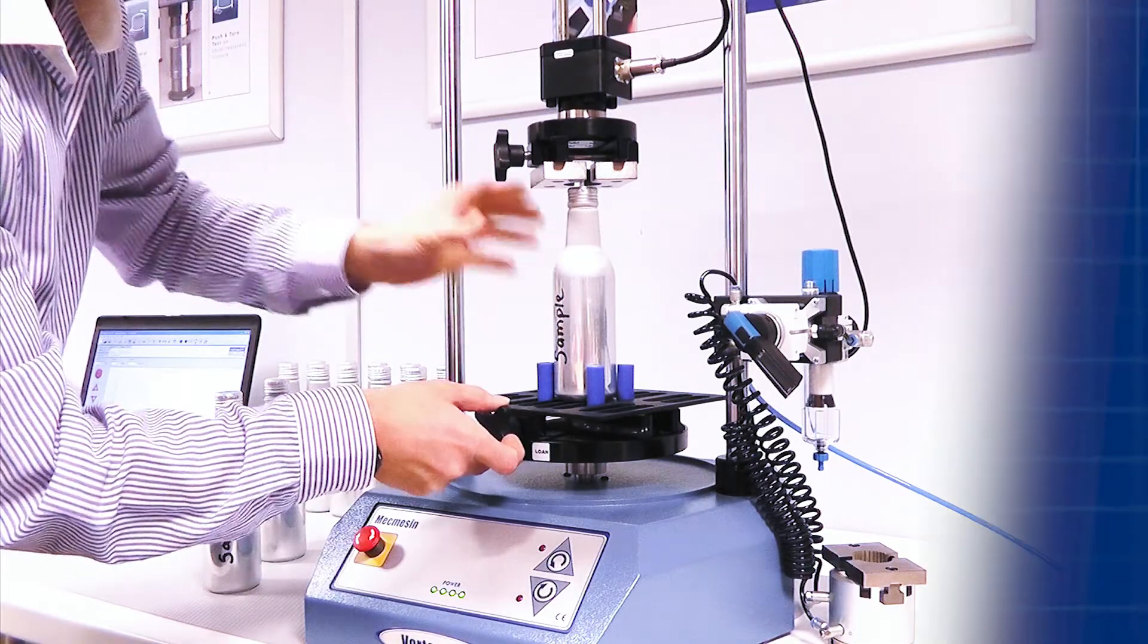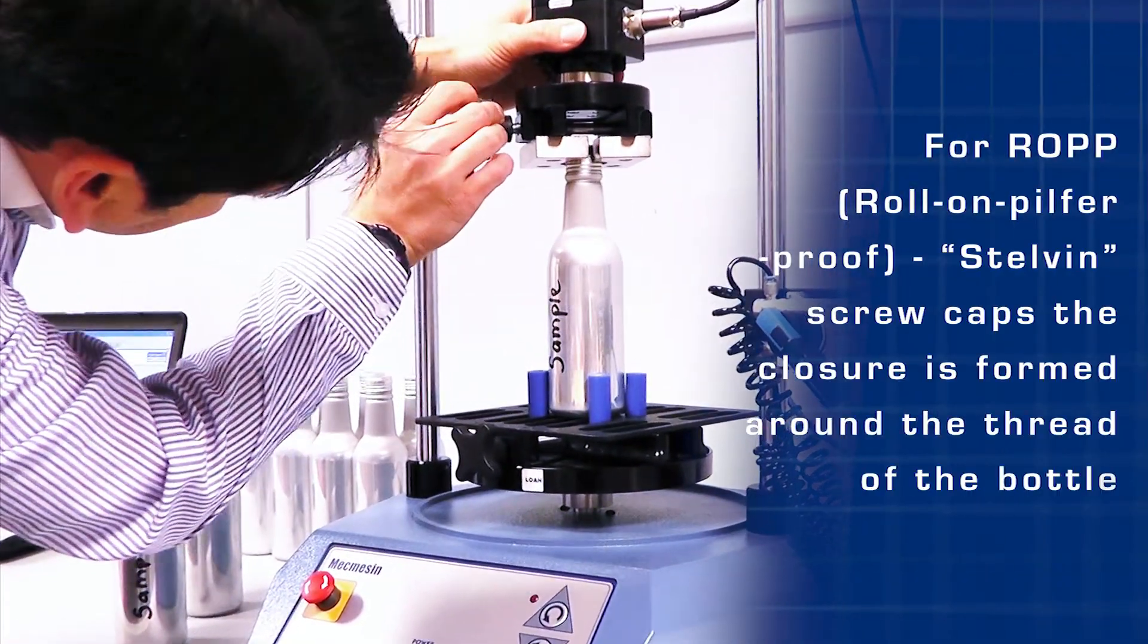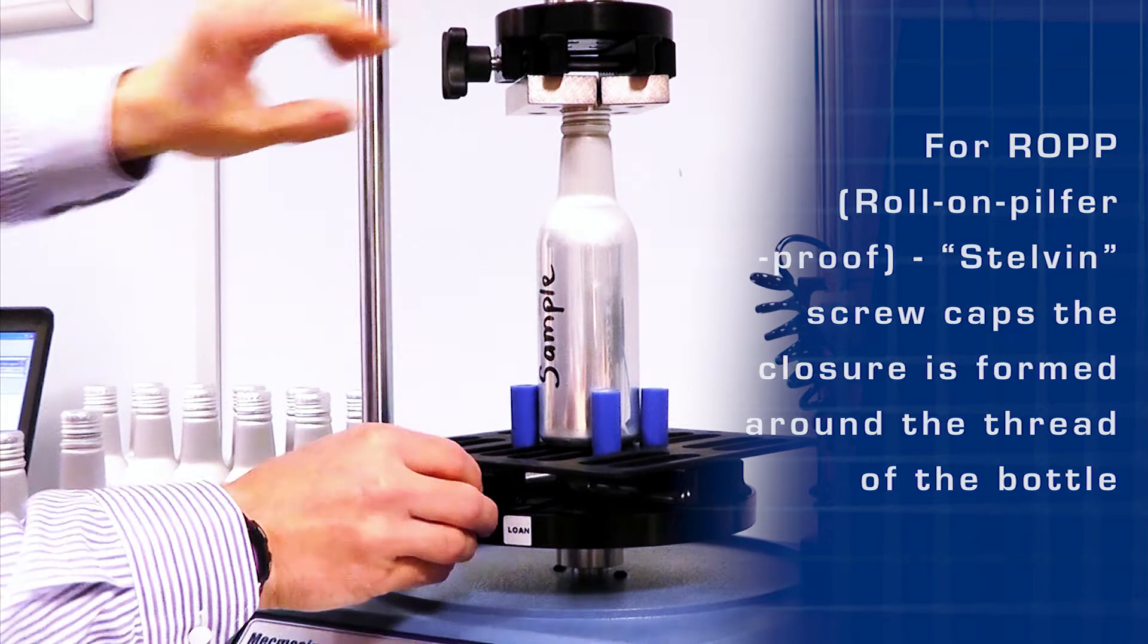For ROPP, or roll-on pilfer proof, Stelvin type screw caps, the closure is formed around the thread of the bottle.